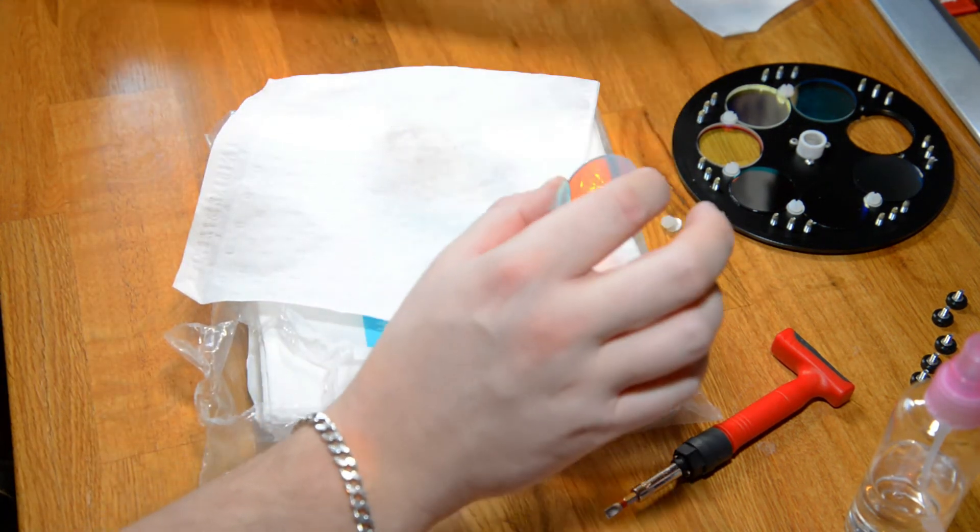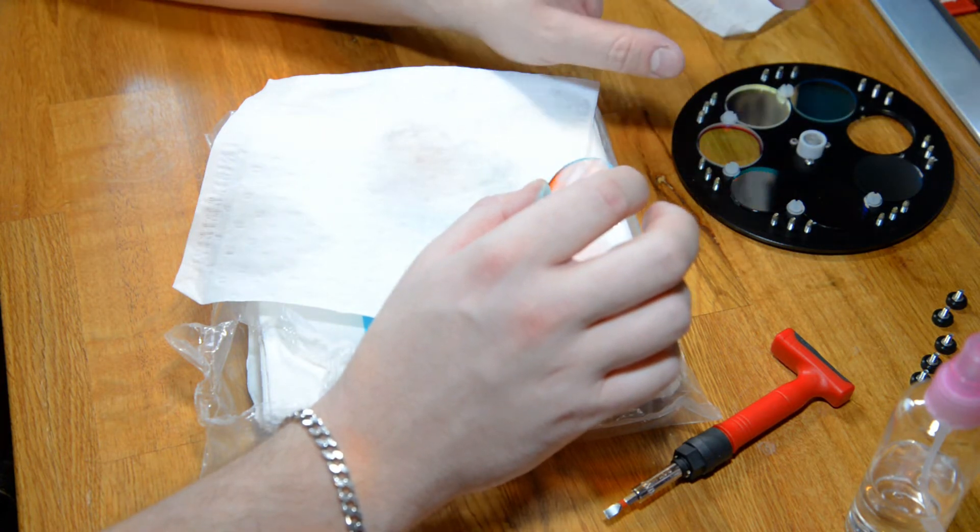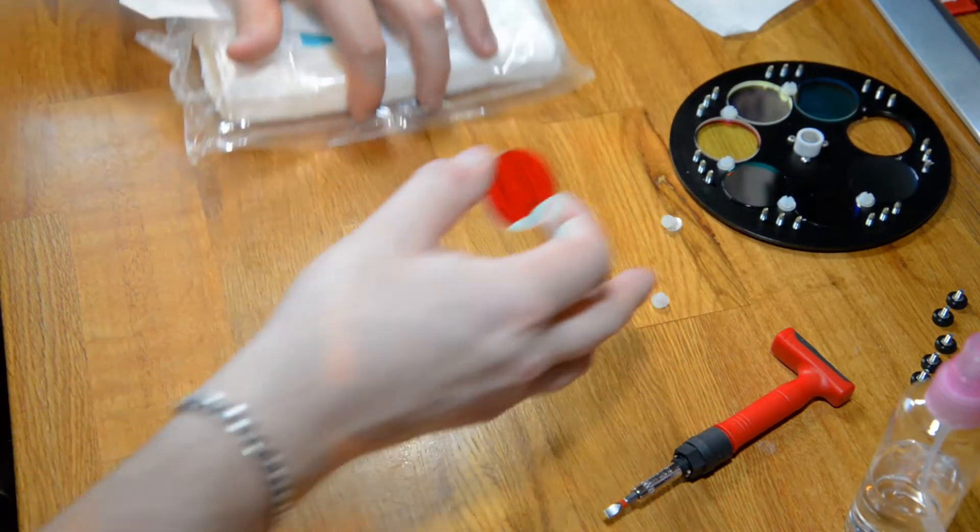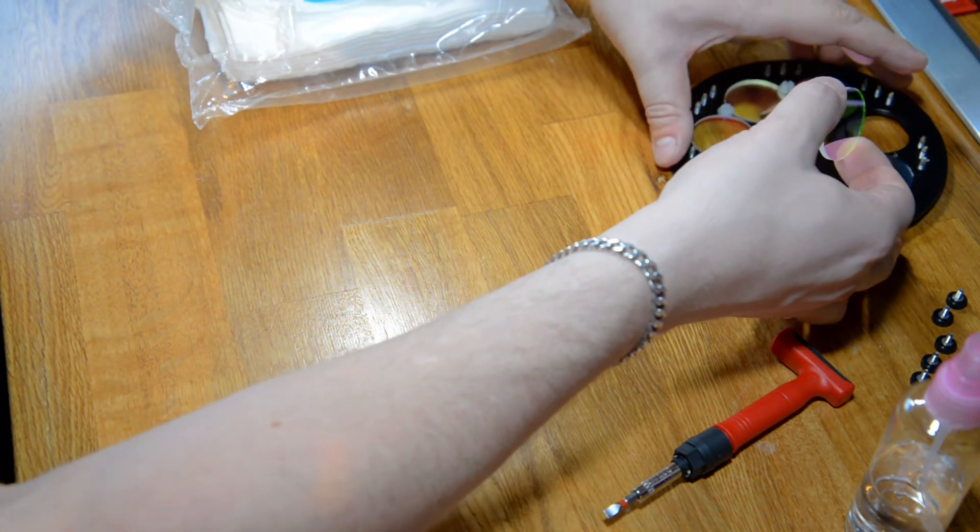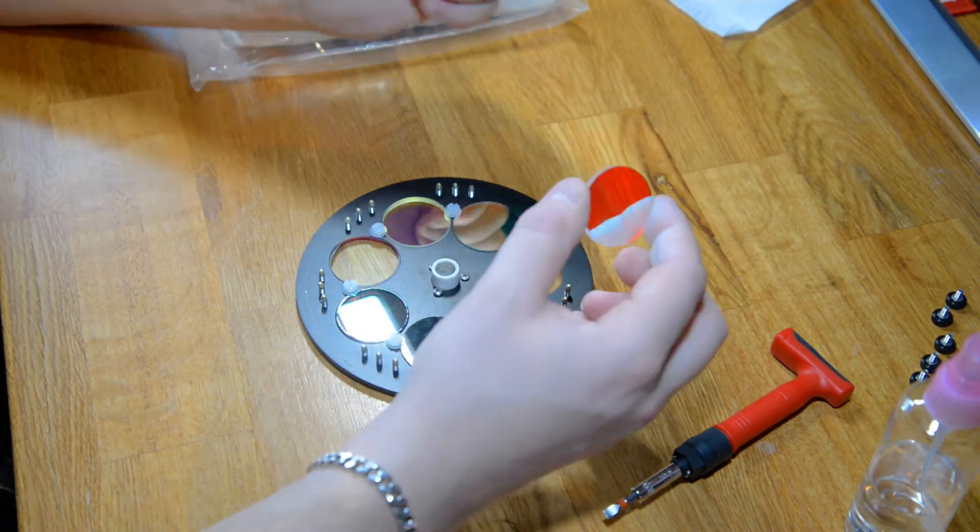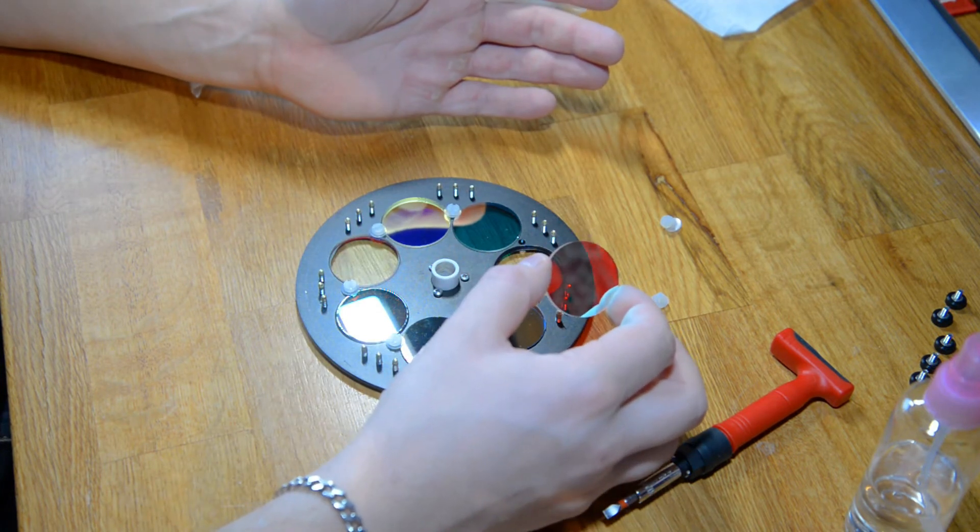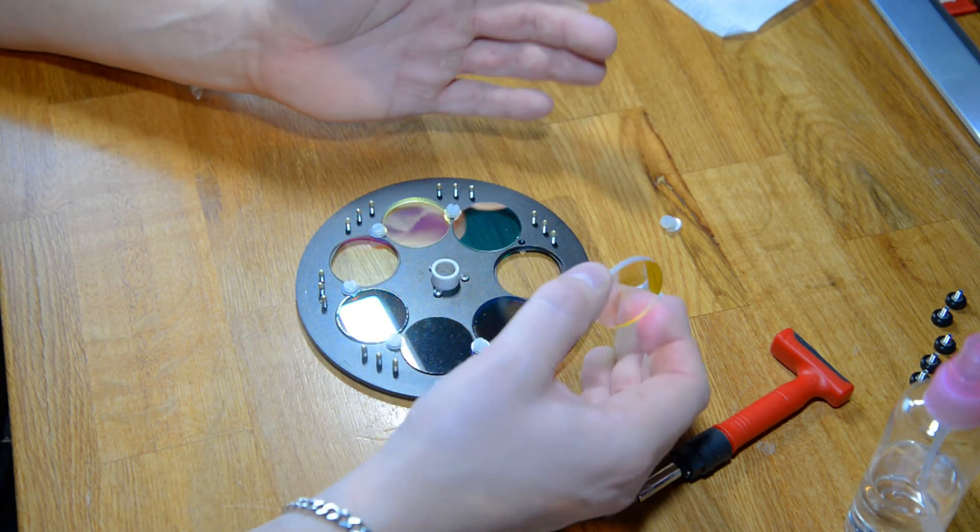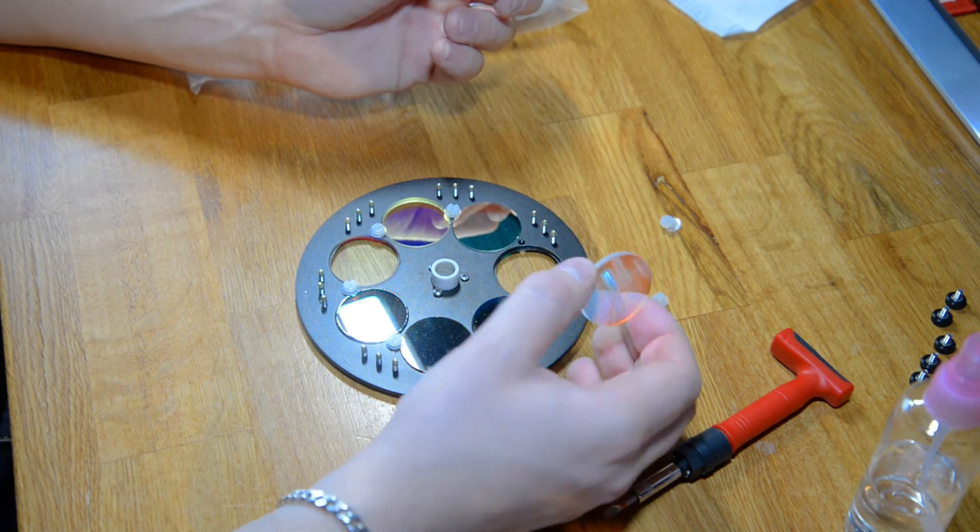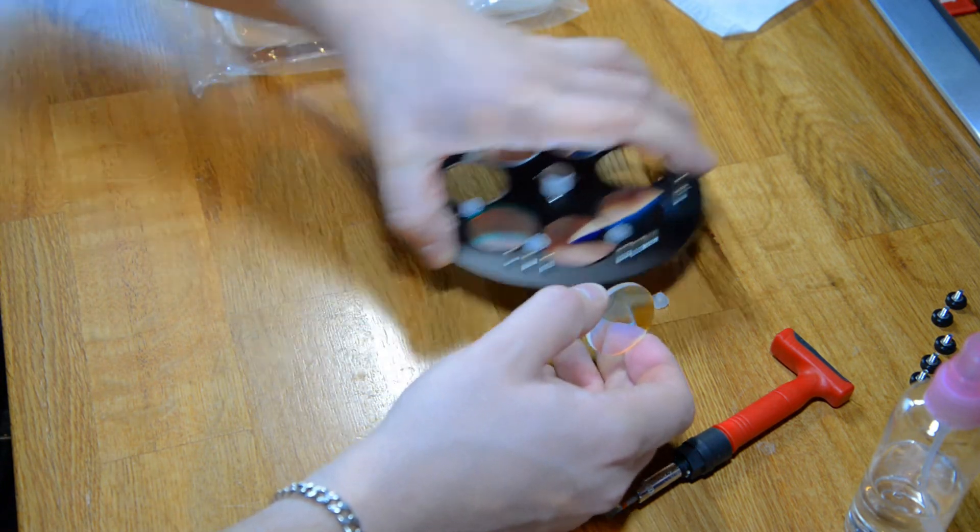So when you have cleaned the filter, just put it back in the right slot at the filter wheel. The filter cassette. So you won't mix them up. So you know each filter is at the right position. So I am going to clean each filter one at a time. And I will show you how the results turned out.